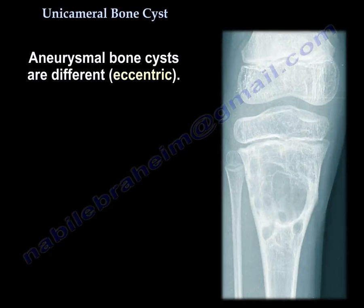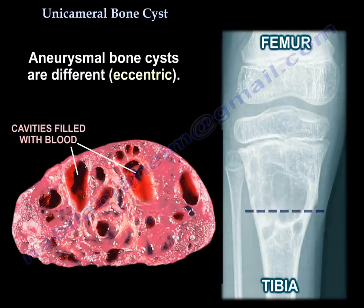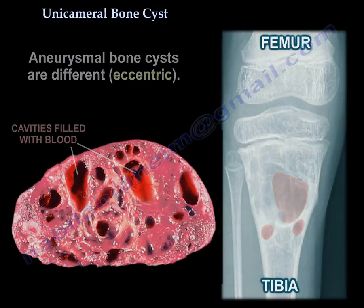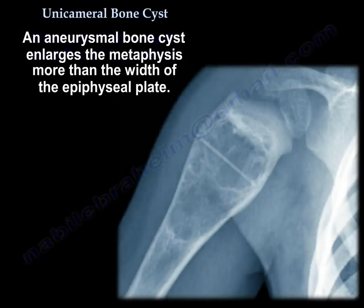Aneurysmal bone cysts are different — they are eccentric. An aneurysmal bone cyst enlarges the metaphysis more than the width of the epiphyseal plate.